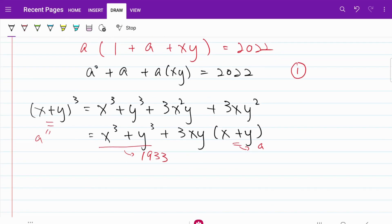Now what I have is a cubed equals 1933 plus 3xy multiplied by a. I'm going to call this my equation 2.